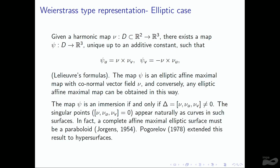The map is an immersion if and only if the determinant of N, N_U, N_V is different from zero. So singular points appear naturally as curves in such surfaces. The only complete affine-maximal elliptic surface is the paraboloid, so every other complete affine-maximal elliptic surface necessarily has singularities. This also holds for hypersurfaces.